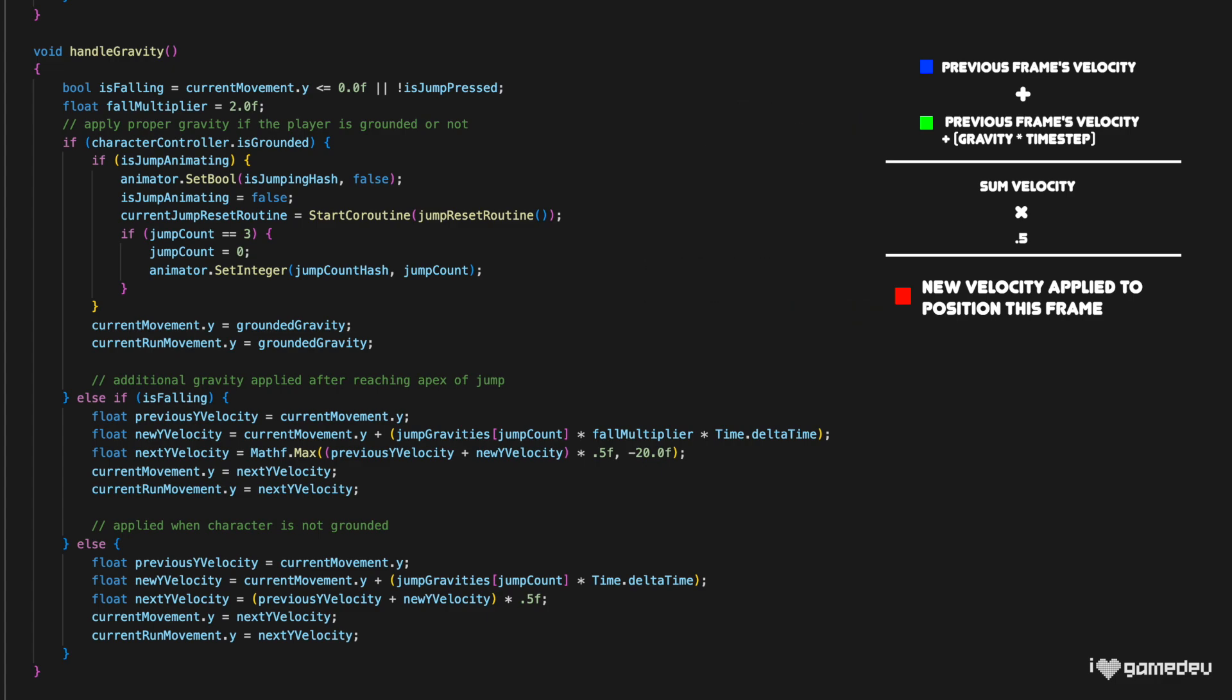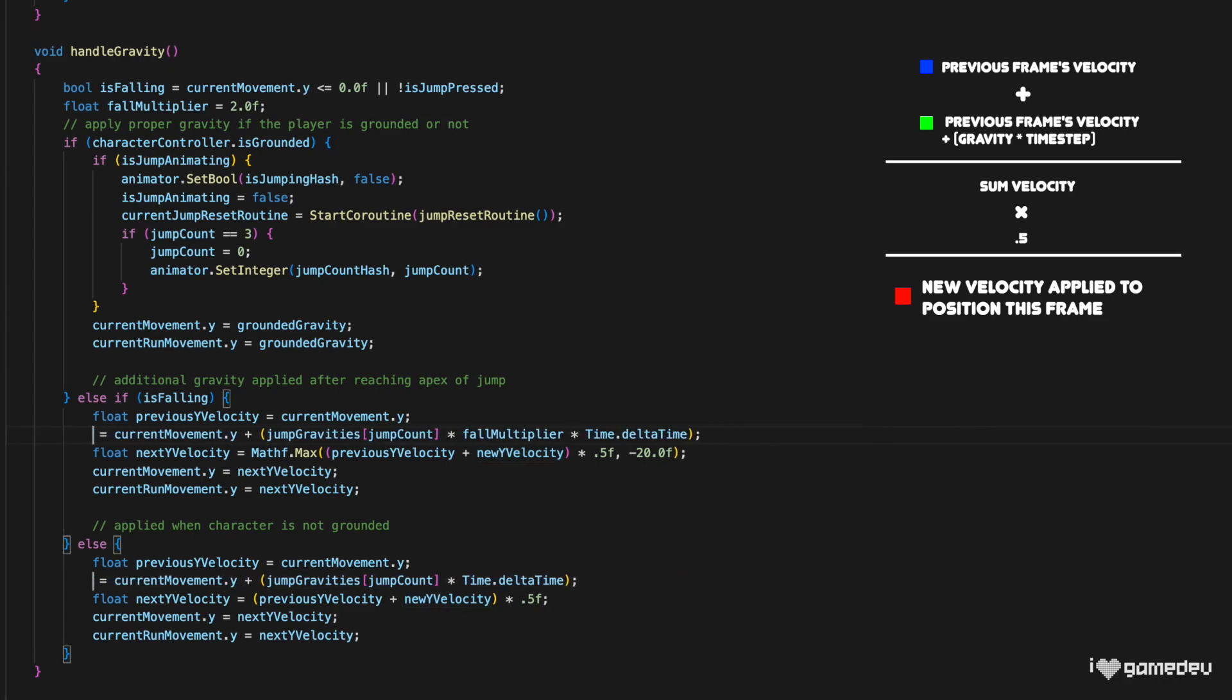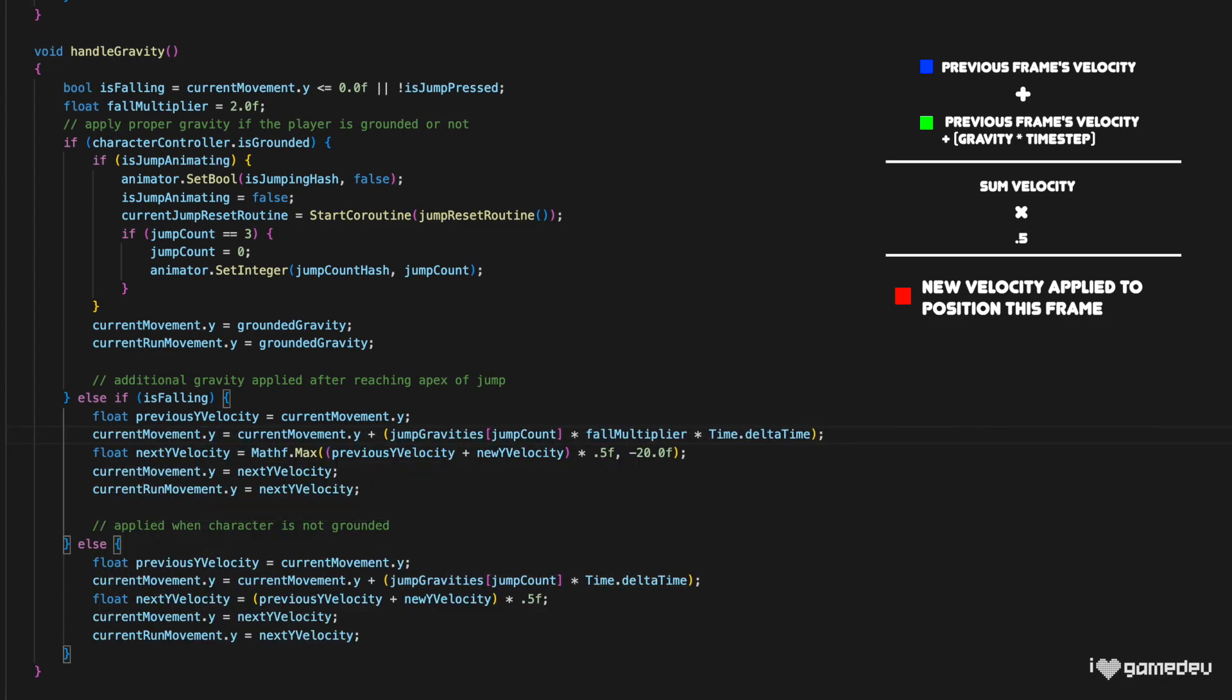Okay, let's fix this issue. PreviousYVelocity will stay the exact same, setting it equal to the currentMovementY value. Then, instead of creating a brand new variable titled newYVelocity, we'll just set currentMovementY value to the calculated velocity value that adds gravity.